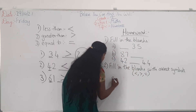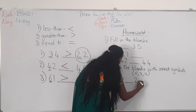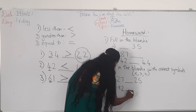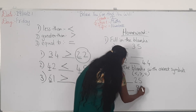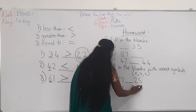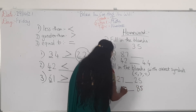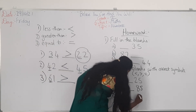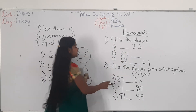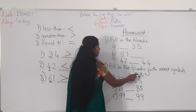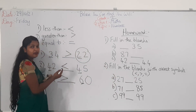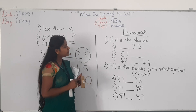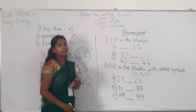Write down the questions: 27 blank 25, 92 blank 85, 85 blank 71, and 99 blank 99. For the second question, you have to compare the numbers and write the respective symbols. Today's homework has two questions: fill in the blanks, then fill in the blanks with correct symbols.